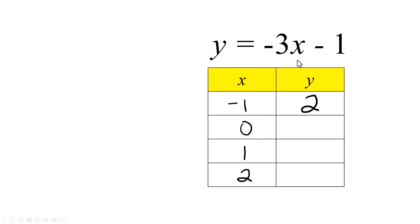Zero makes this easy. It zeros this out. Your answer is negative 1. One times negative 3 is negative 3. Negative 3 minus 1 is negative 4. And 2 times negative 3 is negative 6. And subtract 1 from that, you get negative 7.